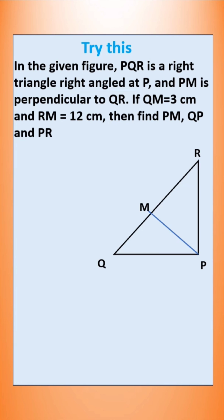In the given figure, PQR is a right-angled triangle, right-angled at P. PM is perpendicular to QR. Here, QM is 3 centimetres and RM is 12 centimetres. Then find PM, QP, and PR. What do you think?